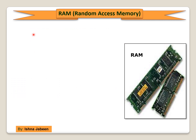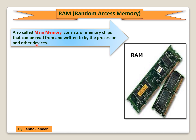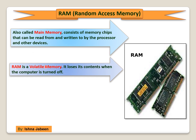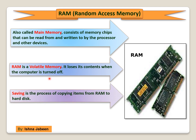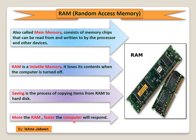Random access memory is also called main memory. It consists of memory chips that can be read from and written to by the processor and other devices. RAM is a volatile memory — it loses its contents when the computer is turned off. For this reason, you must save items you may need in the future. Saving is the process of copying items from RAM to the hard disk. The more RAM a computer has, the faster it will respond.